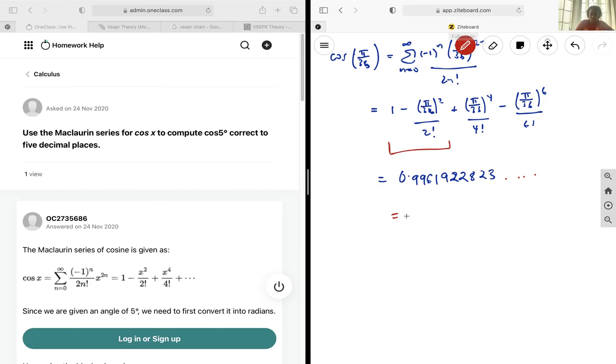you will get 0.996194698. And so we see that it's the same until here, and the reason why is because we just made an approximation by getting rid of the rest of the terms that would have made it correct to that point.